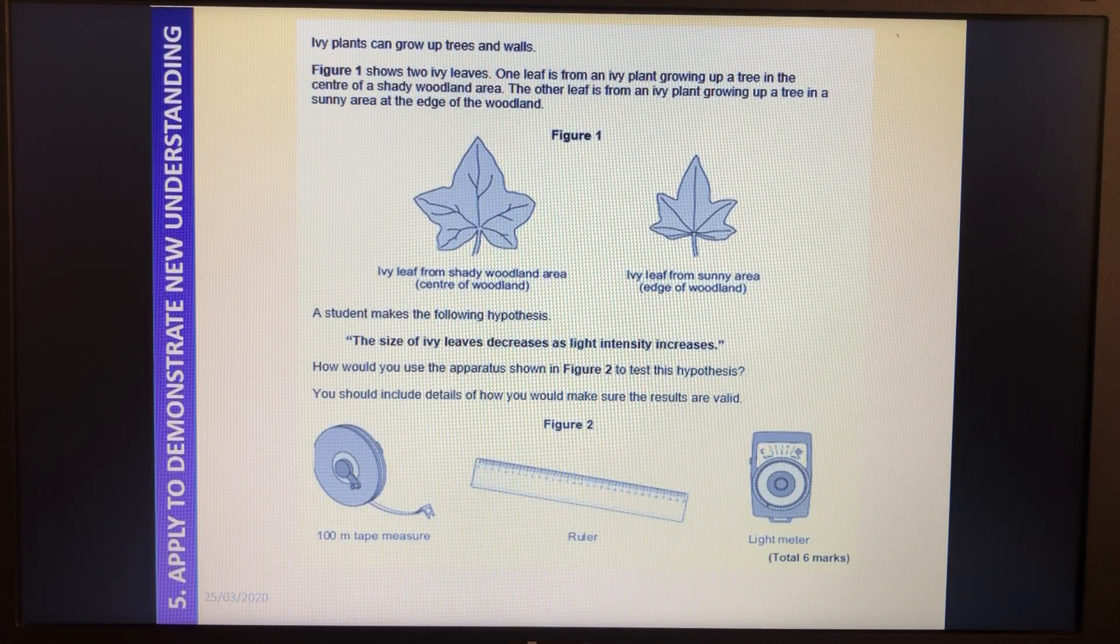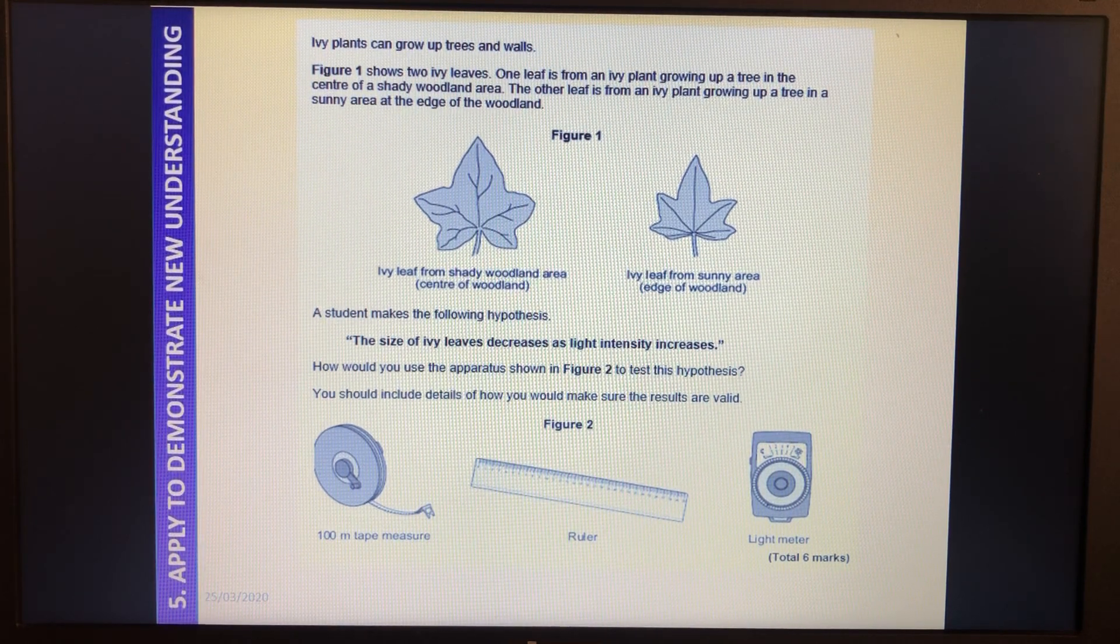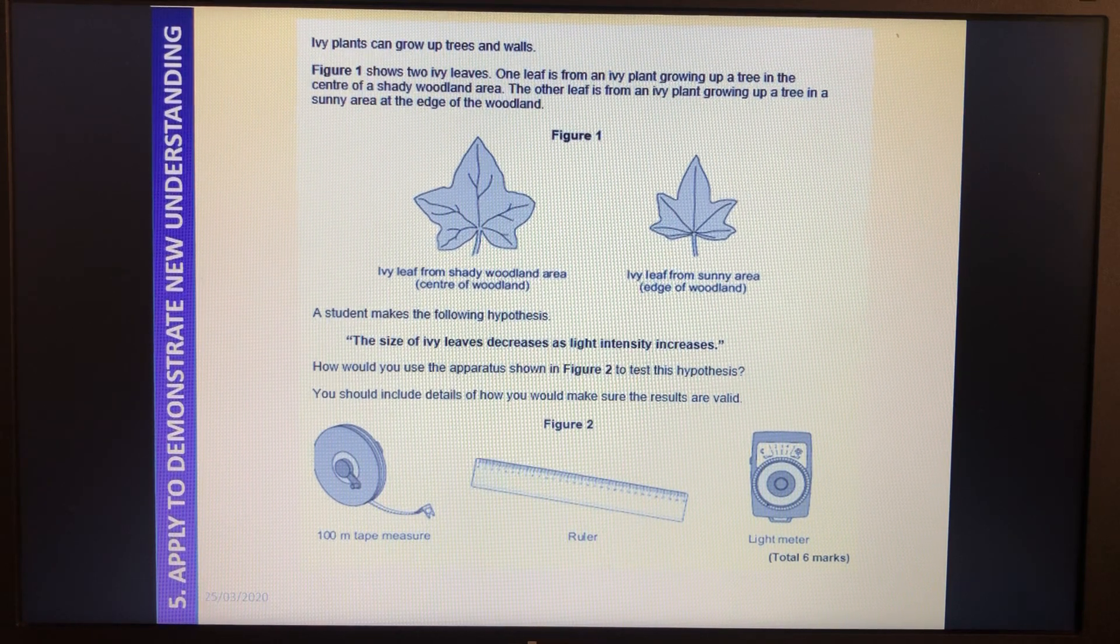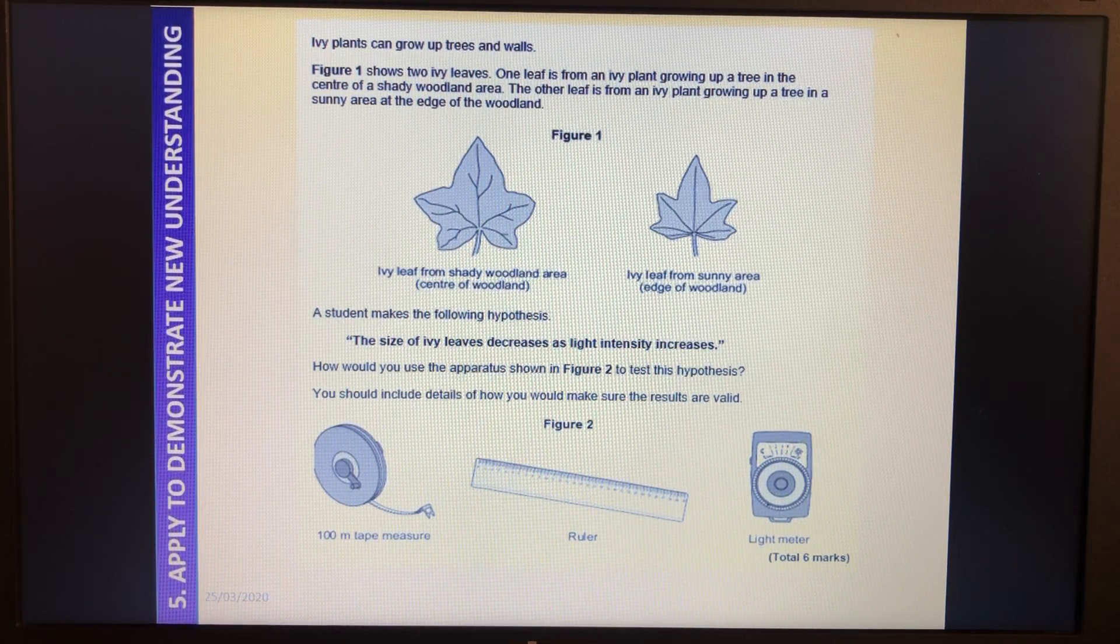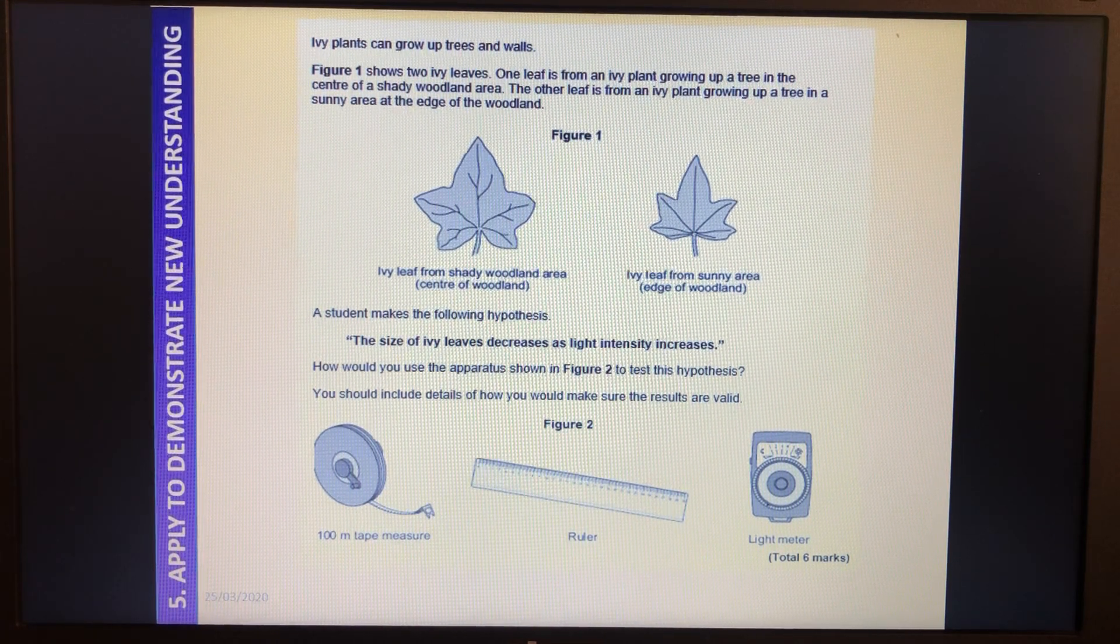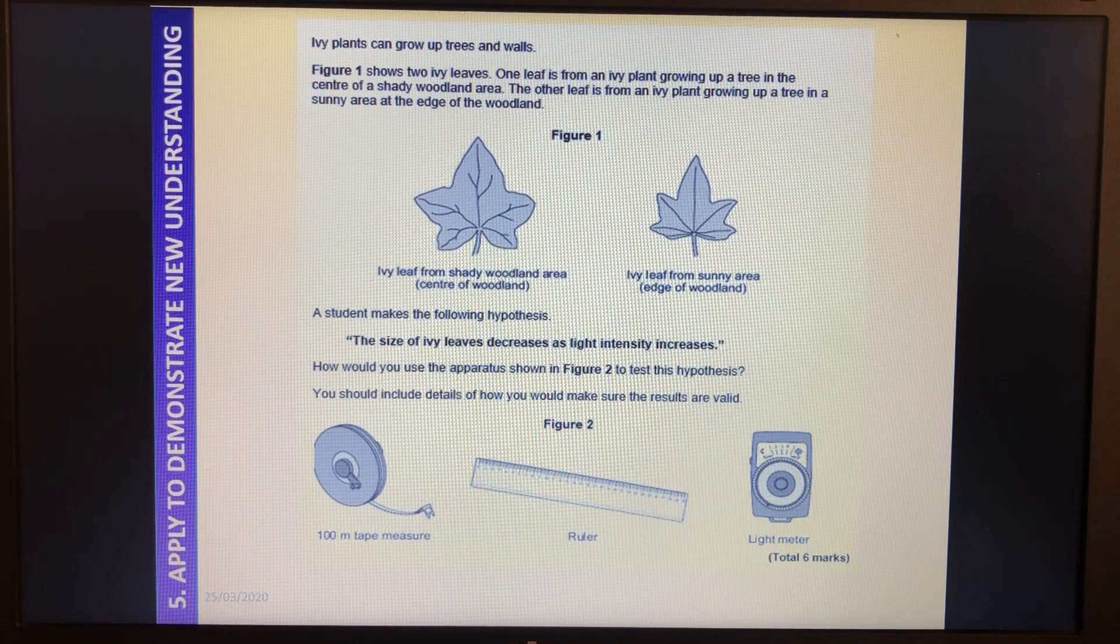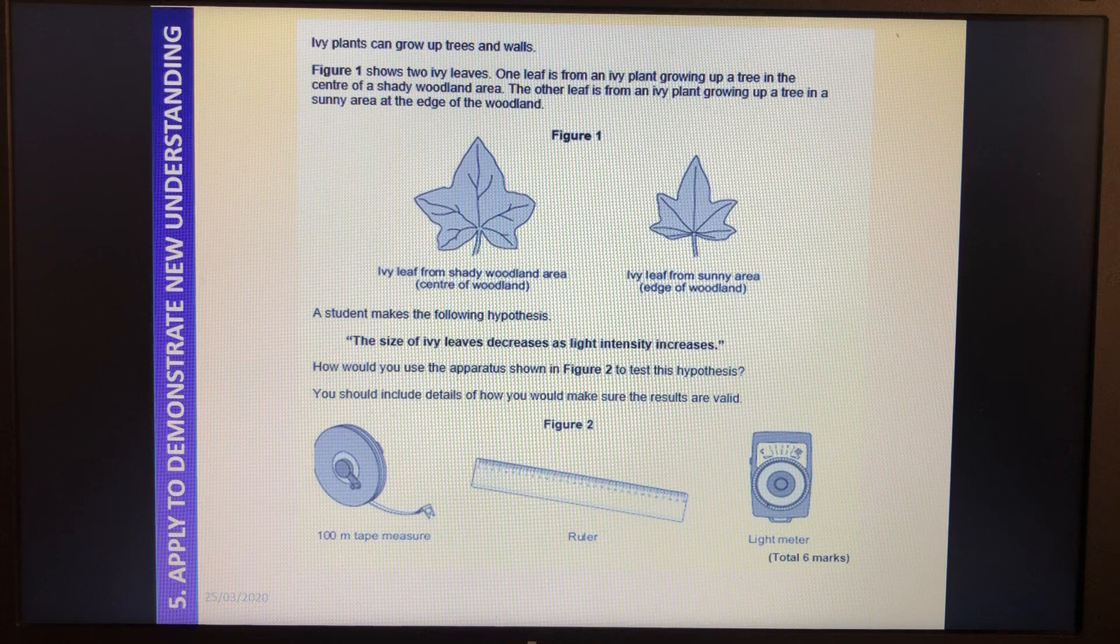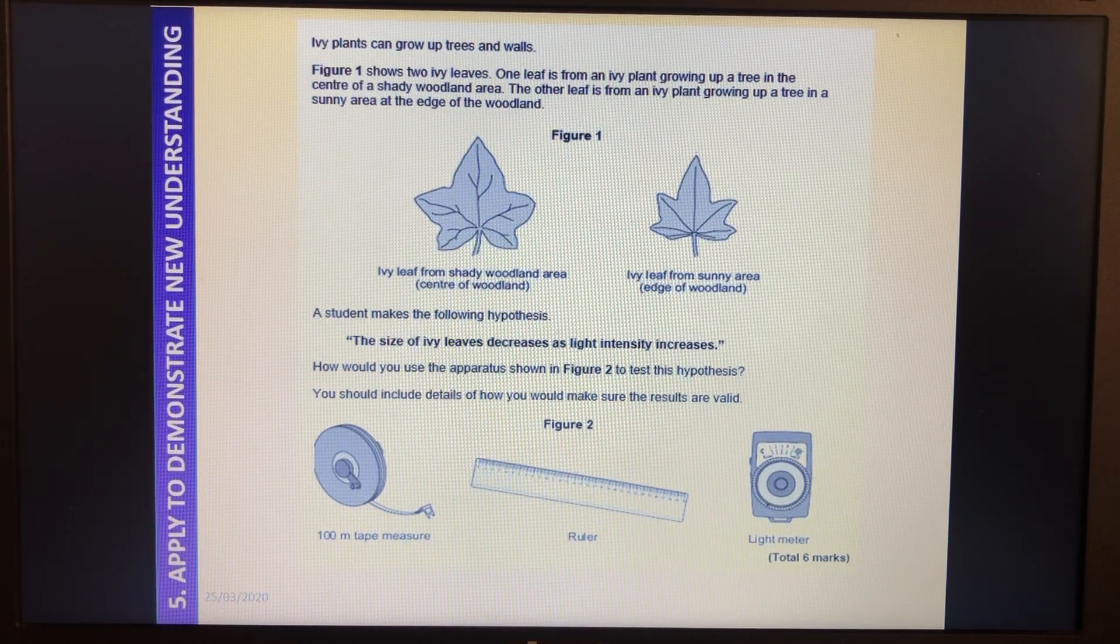So we're looking at an exam question now. And this is kind of taking those ideas that we've already got, it's not a required practical, but it's applying it to that new situation. So we're going to think about what this is asking us, what we already know, and how we can apply it to a six mark question. And we're going to do that six mark question and then green pen it together. So ivy plants can grow up trees and walls. Figure one shows two ivy leaves. One leaf is from an ivy plant growing up a tree in the centre of a shady woodland area. The other leaf is from an ivy plant growing up a tree in a sunny area at the edge of the woodland. So the ivy leaf from the shaded woodland is big, and the ivy leaf from the sunny area is smaller.